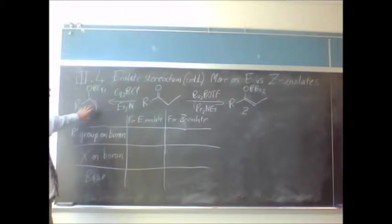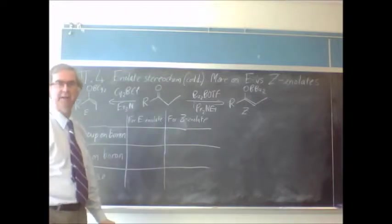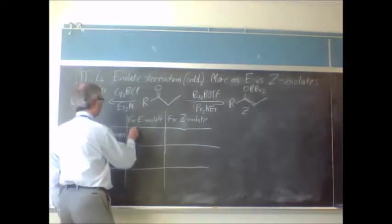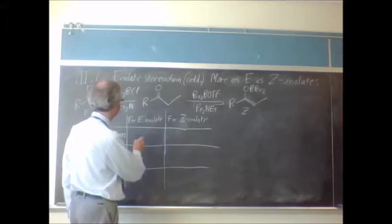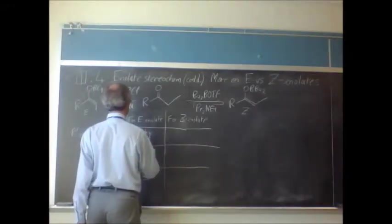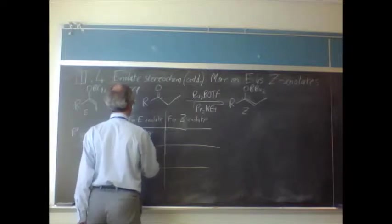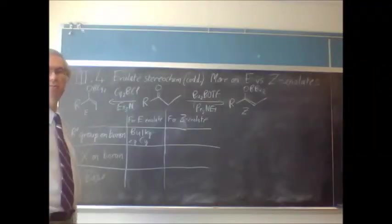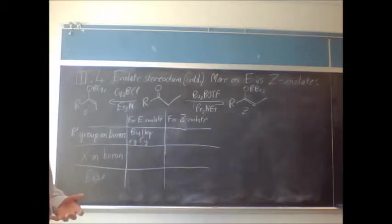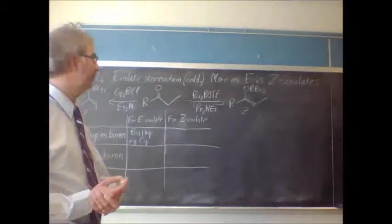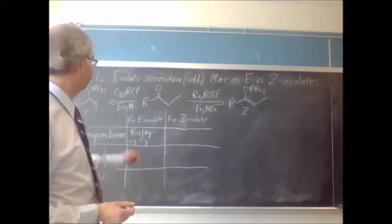So if you want to make the E enolate, you want to have a bulky group on the boron. So a cyclohexyl group, that's what CY stands for. Cyclohexyl is a good one. It's easy, cheap to make. You just make it from cyclohexene and boron, and that will do the job.